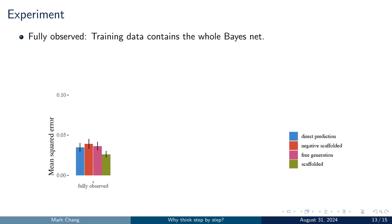Next, we present experiments to demonstrate the proposed method. The first set of experiments considers training data that includes the entire Bayesian network, representing a case where the whole Bayesian network can be observed simultaneously. The results indicate that the scaffolded generation method yields the lowest mean squared error. However, the free generation method does not perform better than the direct prediction method. When the entire Bayesian network is observable, the observed variable and the target variable can appear simultaneously in the same training instance, so generating intermediate reasoning steps may not offer an advantage. The negative scaffolded method, which generates irrelevant intermediate variables, produces the worst results.